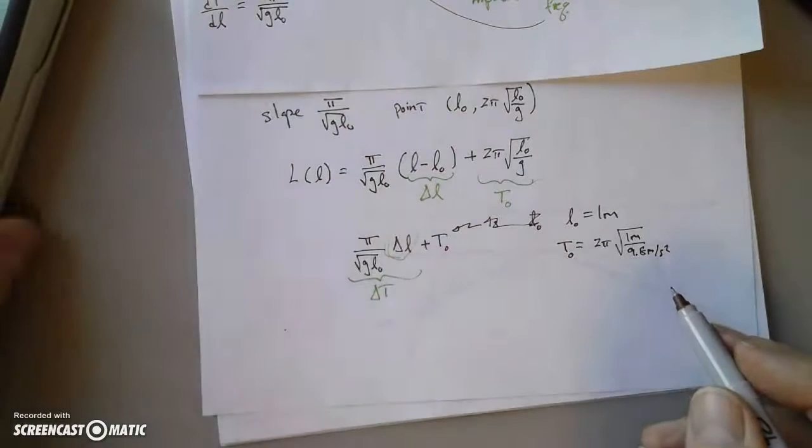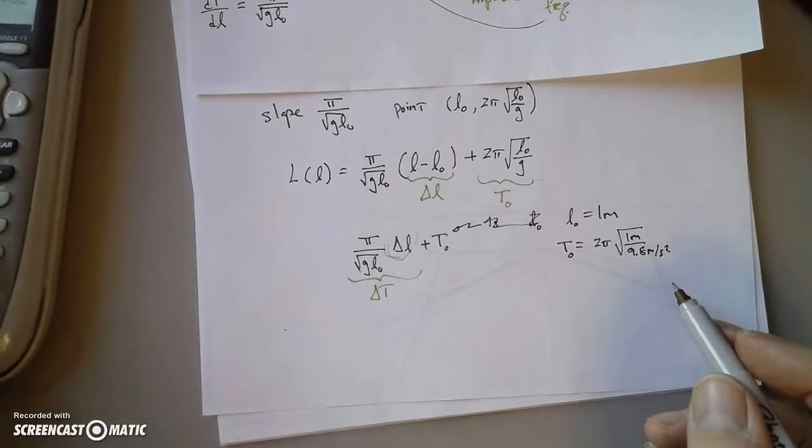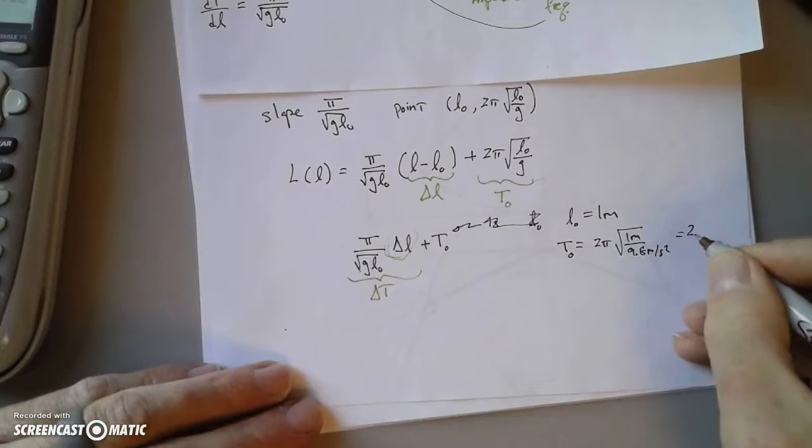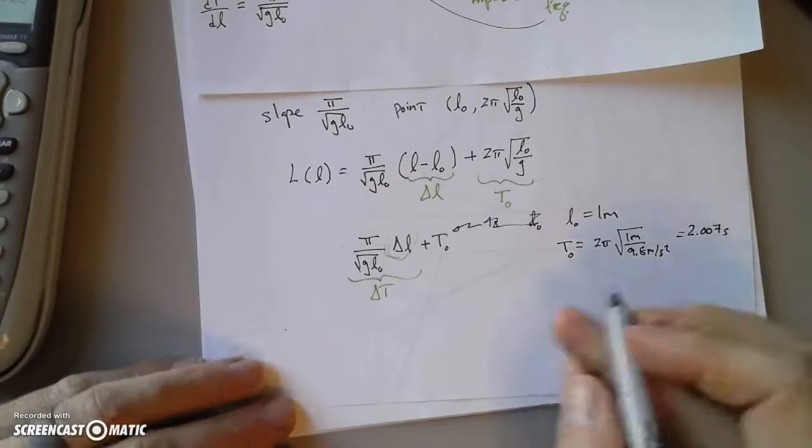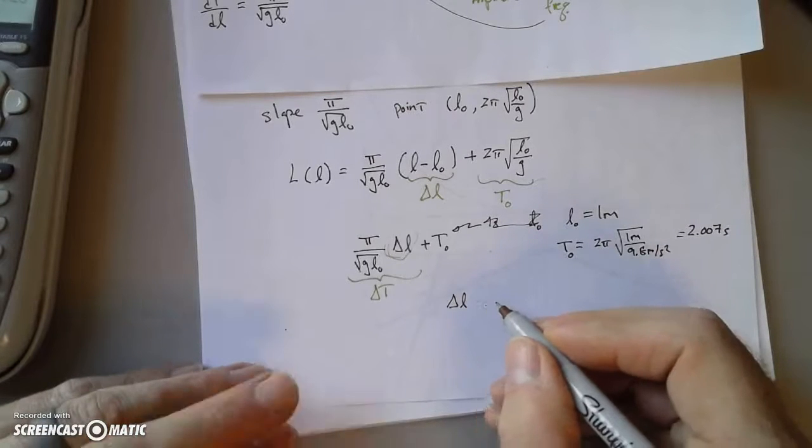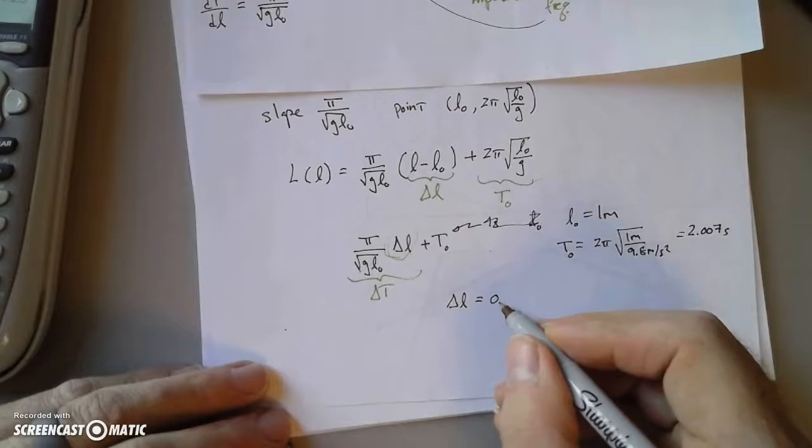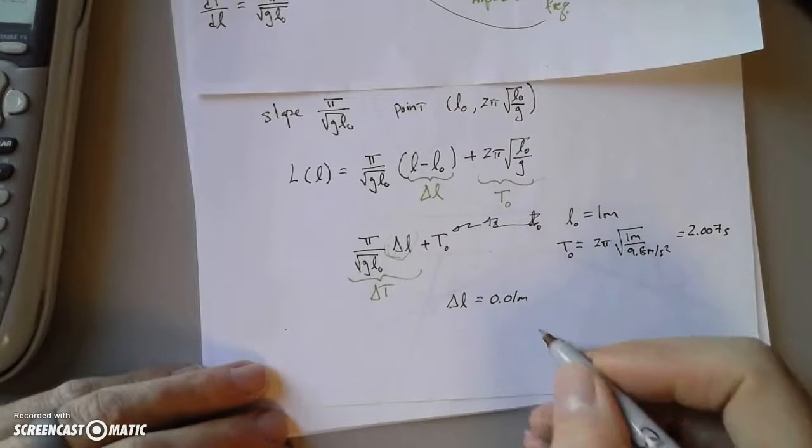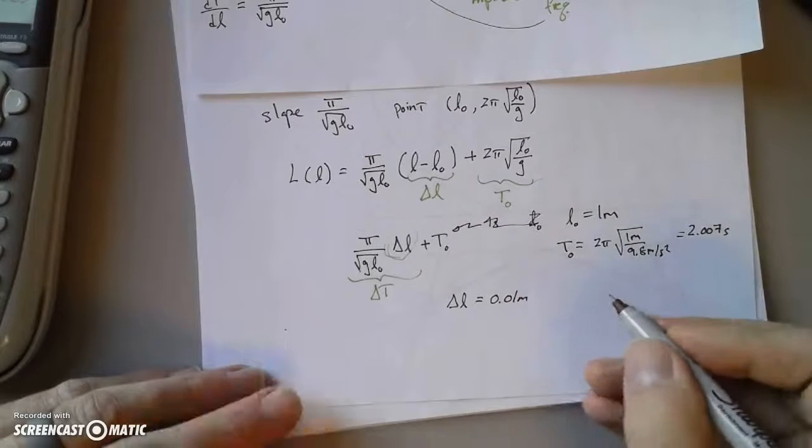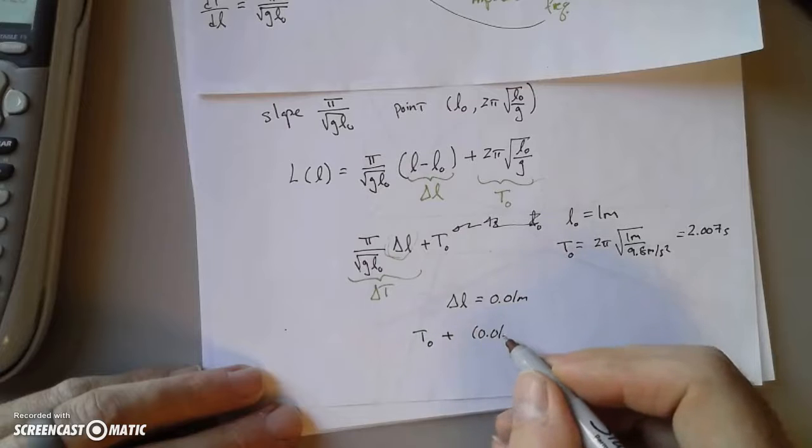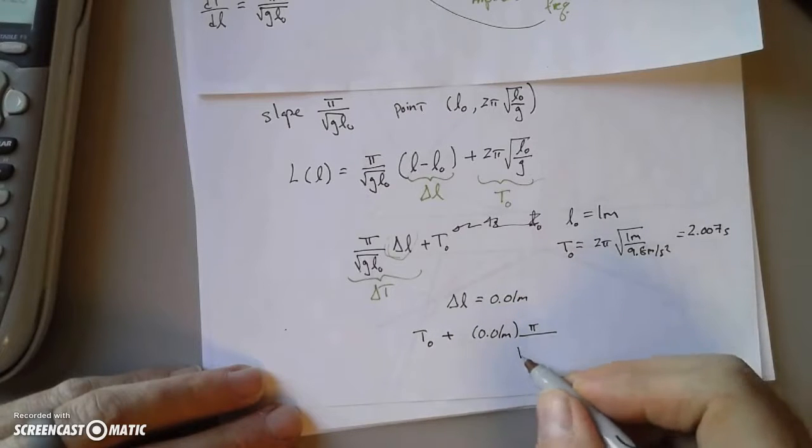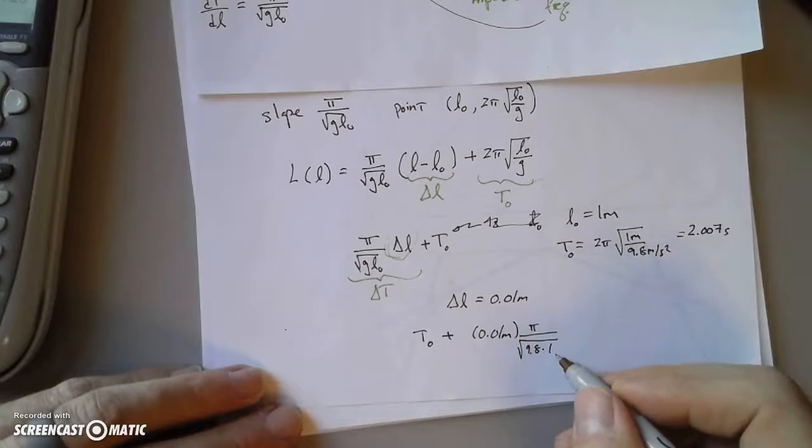So, hypothetically, suppose your length was one meter, then we can calculate the original period, which would be 2 pi one meter over 9.8 meters per second squared. Notice that the units work out. So that's 1 divided by 9.8 square rooted times 2 pi would be 2.007 seconds. Let's suppose that due to heat expansion, there is a 0.01 meter change. So one centimeter, say. What does that end up being?